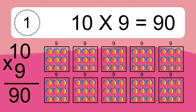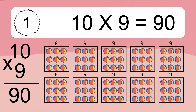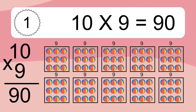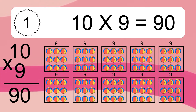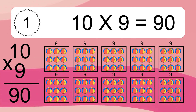We have 10 boxes and each box has 9 colorful balls inside. If you count all the balls in all the boxes together, you will have 10 times 9 balls. This equals 90 balls.